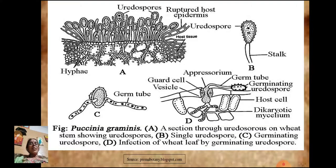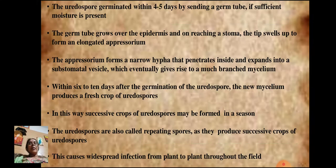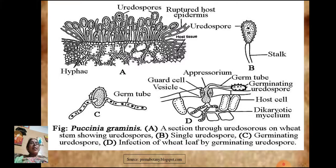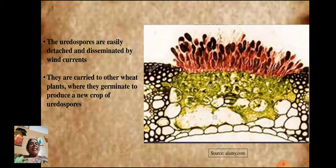The first diagram shows a section through the uredosaurus on the wheat stem, showing uredospores emerging in mass with paraphyses intermingled. The second diagram shows a single uredospore provided with two wall layers and a stalk, which on germination produces a germ tube.